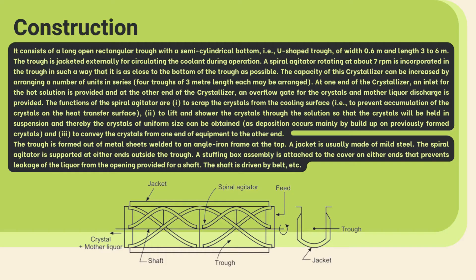The capacity of the crystallizer is increased by connecting a number of troughs in series. In ideal conditions, around four troughs of 3 meters length each can be used in series. There are two provisions for inlet and discharge: at one end the inlet for the feed solution is provided, and at the other end an overflow gate for crystals and mother liquid is provided. The spiral agitator scrapes crystals from the cooling surface, keeps crystals in suspension by lifting and showering them in the solution, and produces a uniform crystal size.